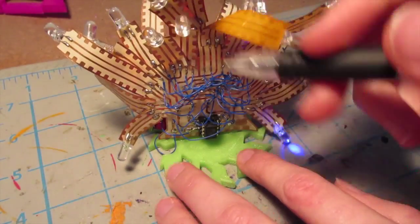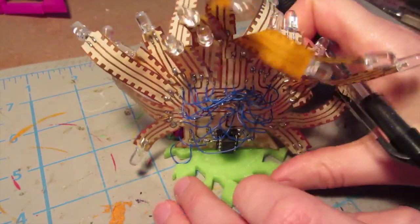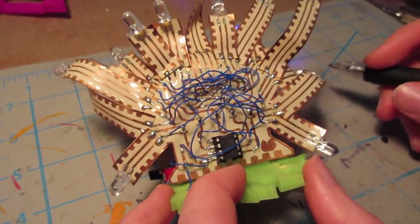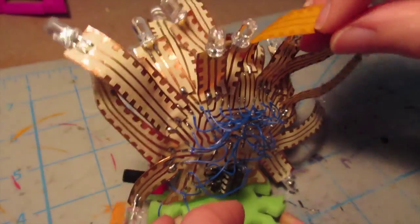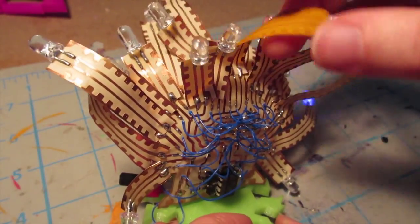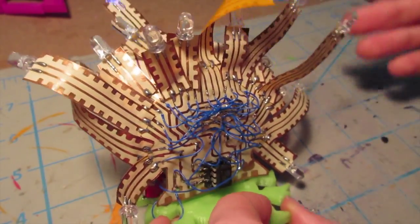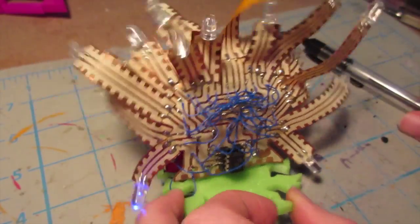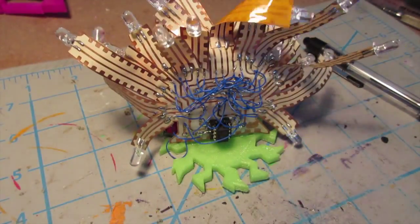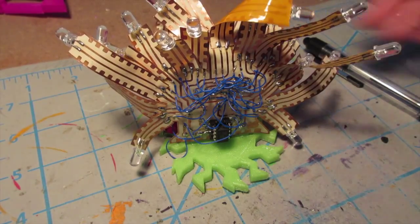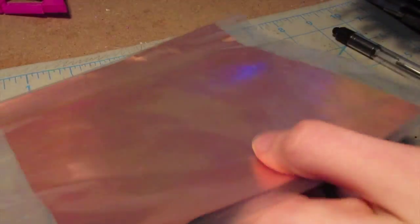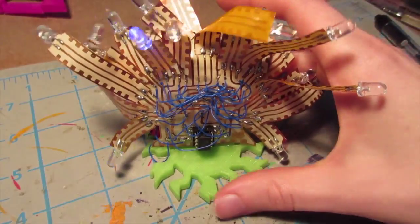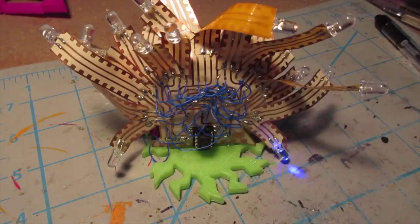This material is called Pyralux. Pyralux is just a layer of Kapton tape, then an adhesive, and then copper on top. You can get sheets of it now from Adafruit. This is what a sheet of Pyralux looks like. So how do we go from this material to this?